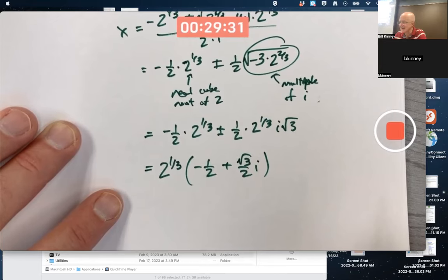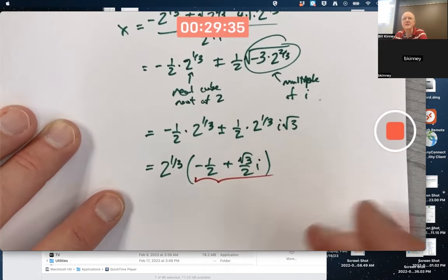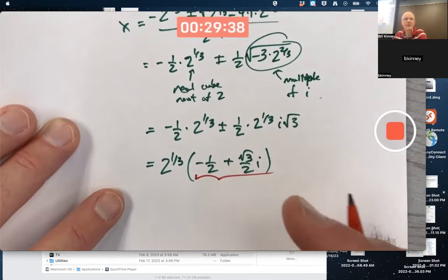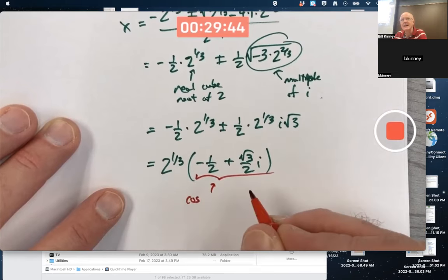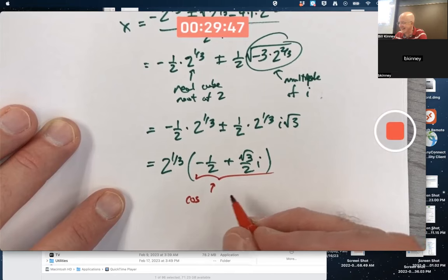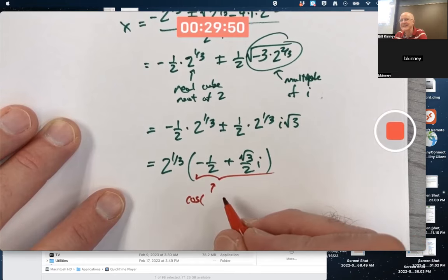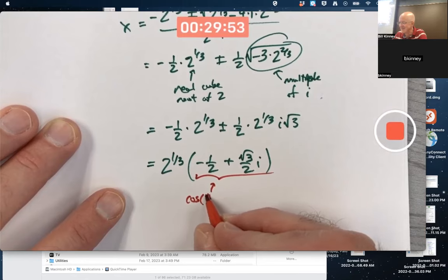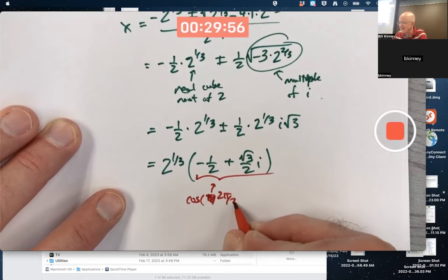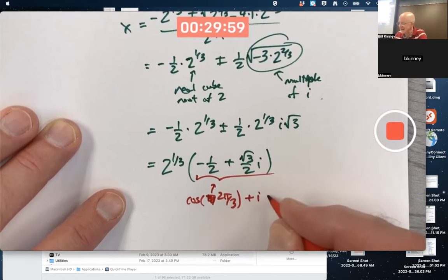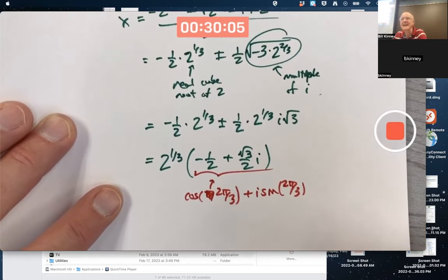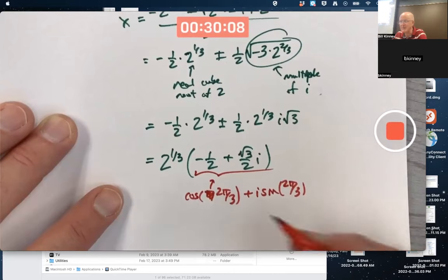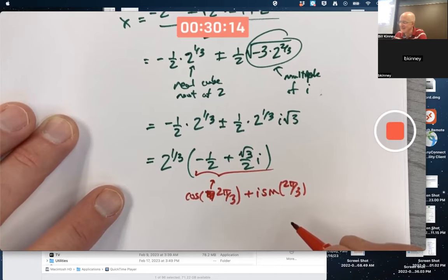And this, look at this one. Don't those numbers look special? Negative 1/2 and the square root of 3 over 2. That's nothing other than cosine of 120 degrees, 2π over 3 radians, plus i times sine of 2π over 3 radians, 120 degrees. You can use trigonometry to represent this in a nice way. Those are the other two roots.